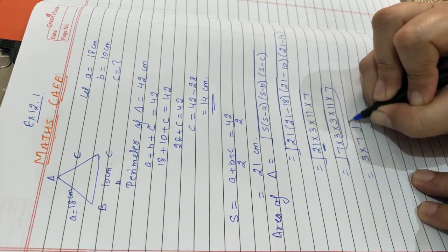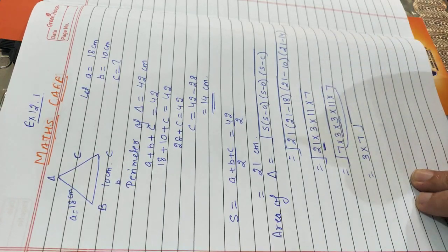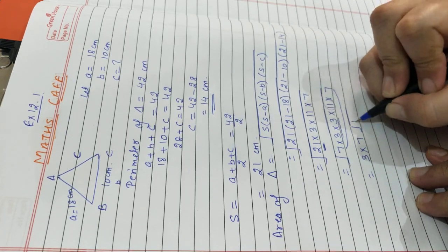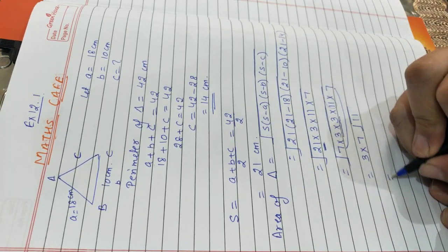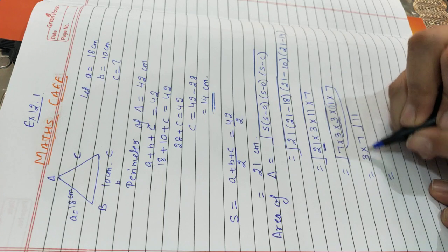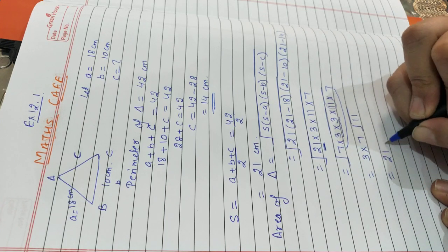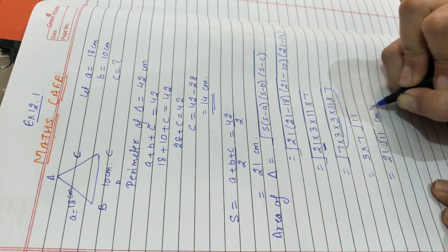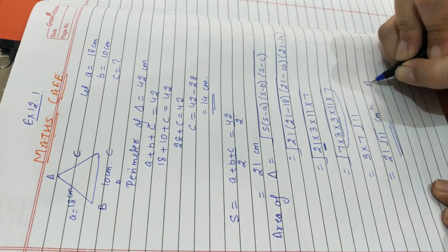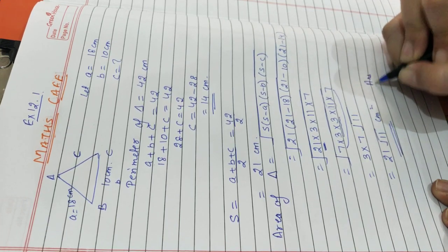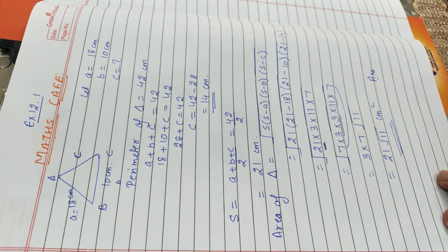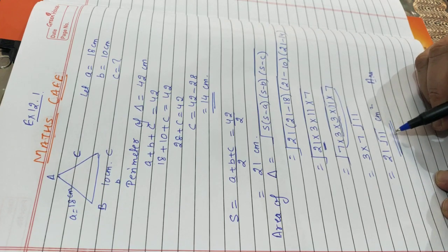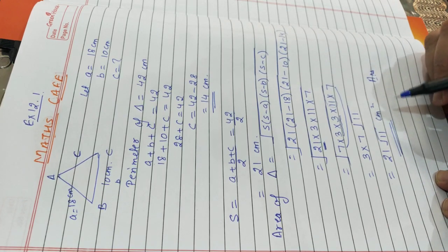What is left inside the root is only 11. So the area is 3 × 7 × √11 = 21√11 centimeter square. Area of the triangle is 21√11 centimeter square.